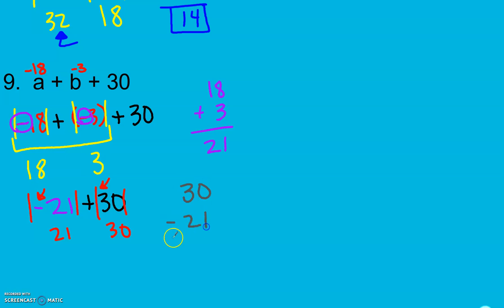Bigger absolute value on top. And then we look to get our sign from our bigger absolute value. 30 is positive, so my answer is positive. And we get a positive 9. And that is all I have for section 1.5.